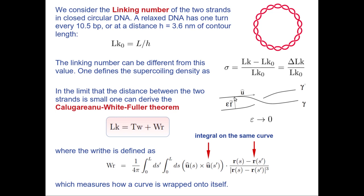The vector U is the tangent to the average position — the curve describing the center of the double helix. Going back to the Gauss linking integral, I had u and u', and r and r'. Here I have a double integral on the same curve. That's the difference. So the linking number splits into twist and writhe, and I can write a similar relation for the excess linking number: delta LK equals delta twist plus writhe. The writhe measures how a curve is wrapped onto itself — it's about the self-crossing of a curve.